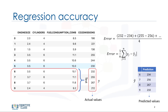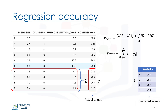Basically, we can compare the actual values and predicted values to calculate the accuracy of a regression model. Evaluation metrics provide a key role in the development of a model as they provide insight to areas that require improvement. We'll be reviewing a number of model evaluation metrics including mean absolute error, mean squared error, and root mean squared error. But before we get into defining these, we need to define what an error actually is.